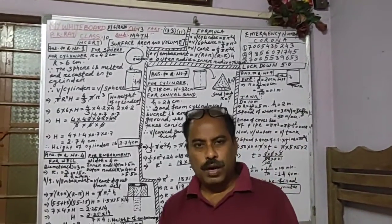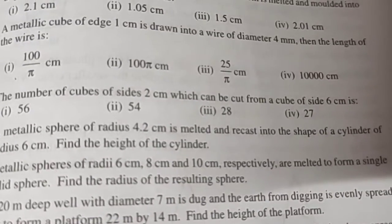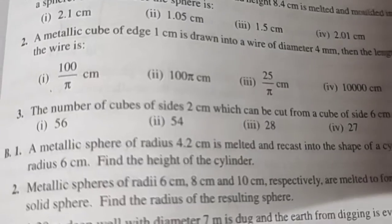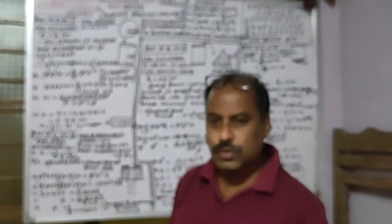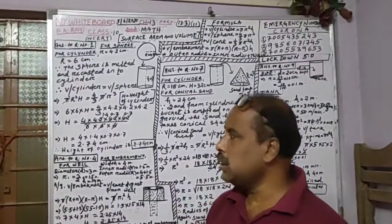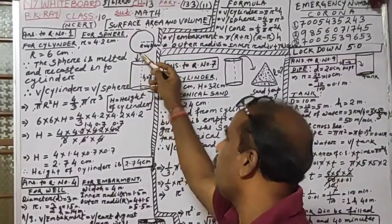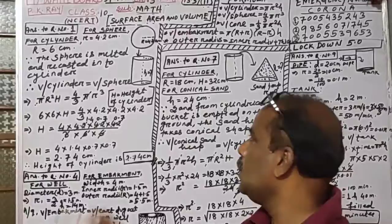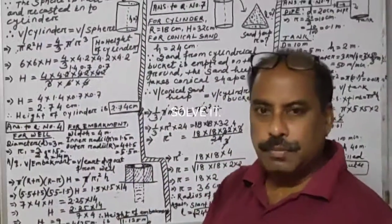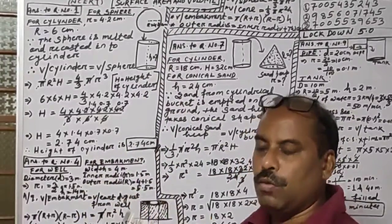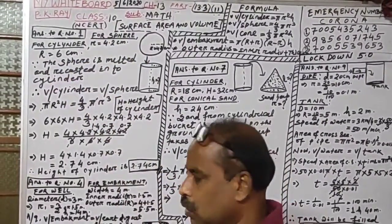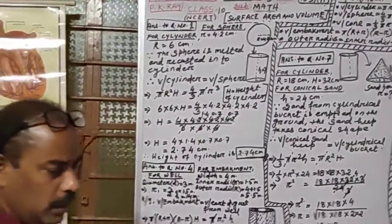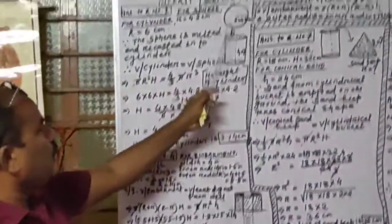Let us come to question number 1. A metallic sphere of radius 4.2 cm is melted and recast into the shape of a cylinder of radius 6 cm. Find the height of the cylinder. So according to the question, this metallic sphere is melted down and then recast into a cylindrical shape. We have to write two parts: one for sphere and one for cylinder. For the sphere, radius r = 4.2 cm.